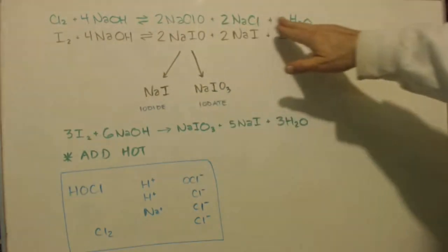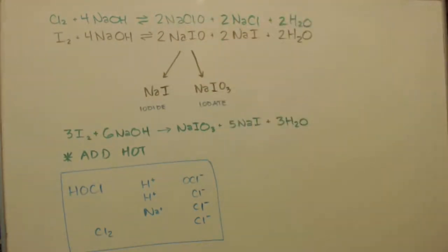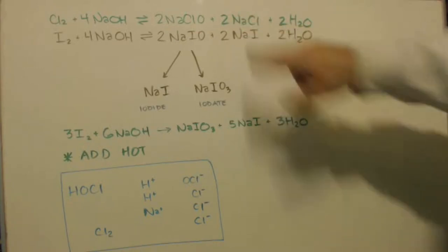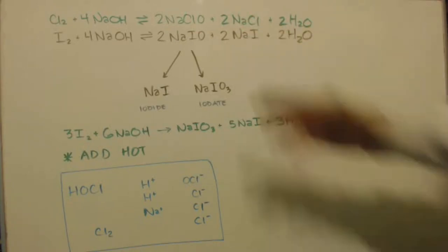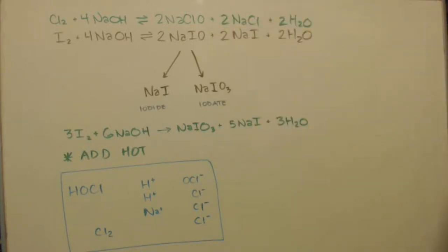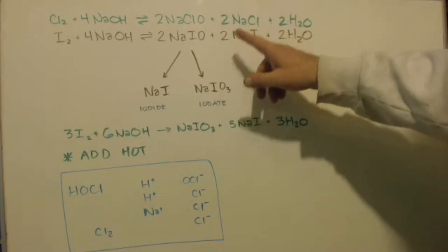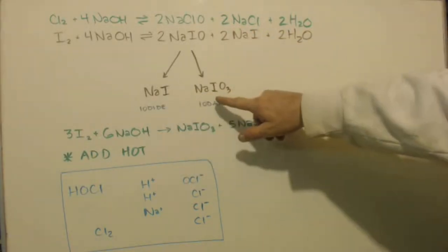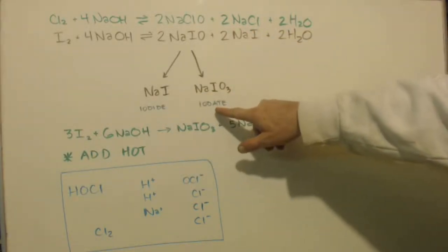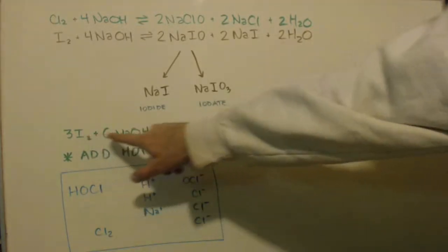When you buy bleach at the store it actually has sodium chloride in it because that's how they made it. Now, how do you make the chlorate? You take that bleach and you boil it, and it disproportionates into sodium chloride and sodium chlorate.